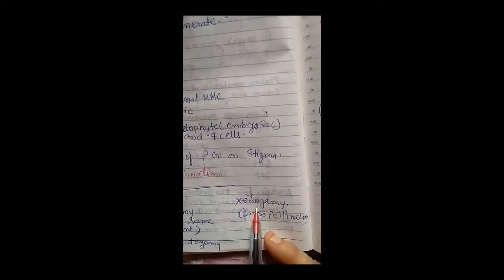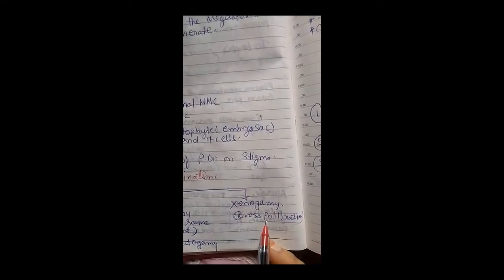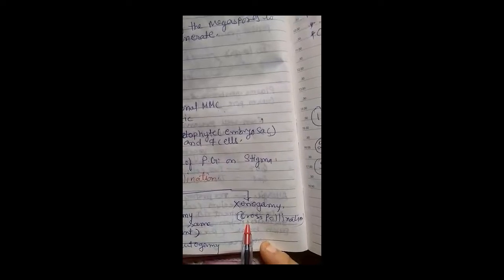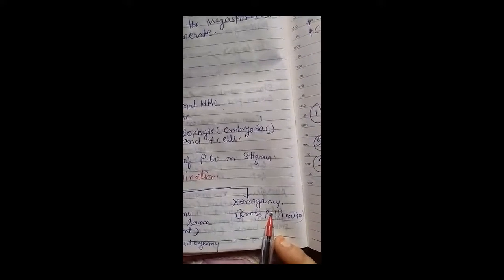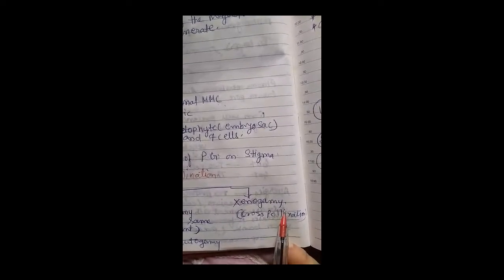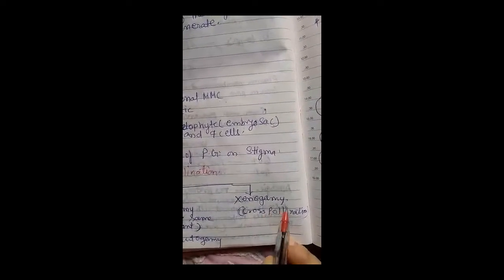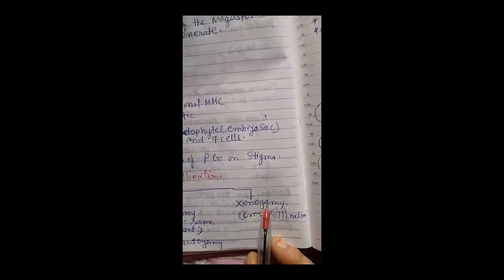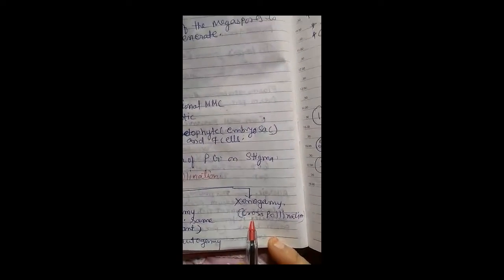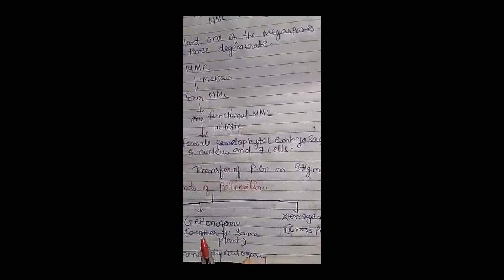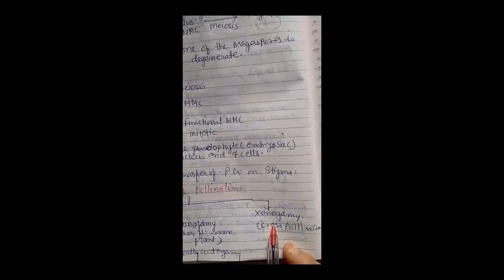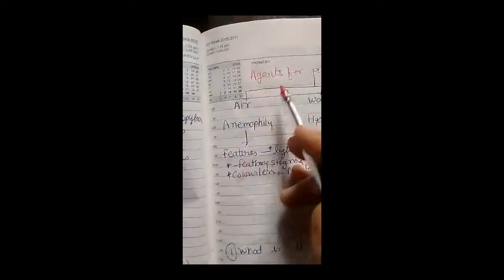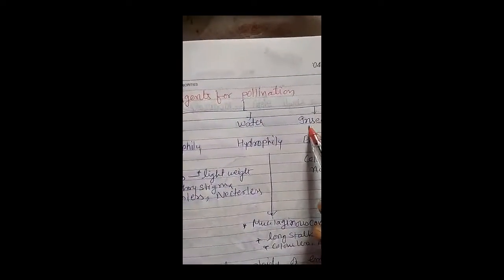The third type is xenogamy — actual cross-pollination — in which the pollen grain of one flower transfers to the stigma of another flower of a different plant of the same species. Here, the plants are different. In geitonogamy and xenogamy, agents are required to transfer pollen grains — such as air, water, and insects.